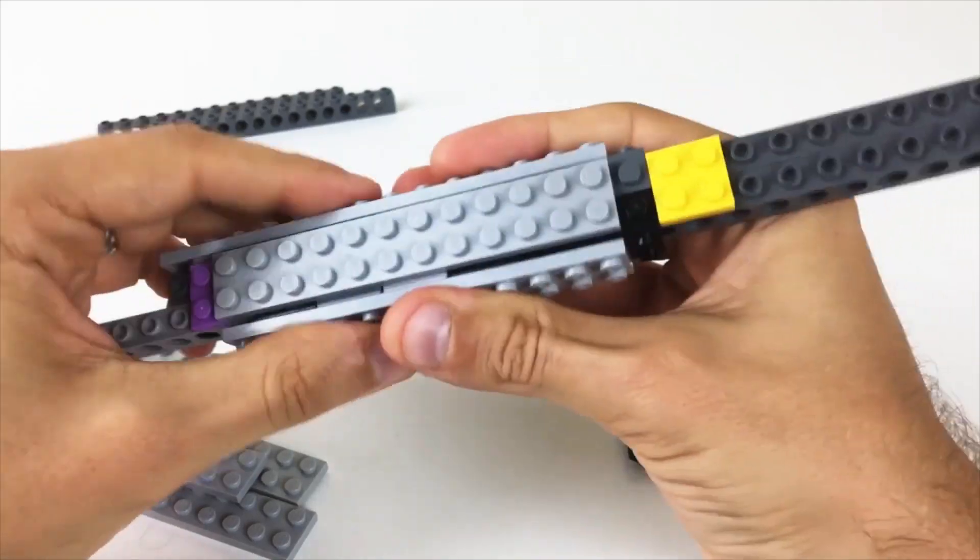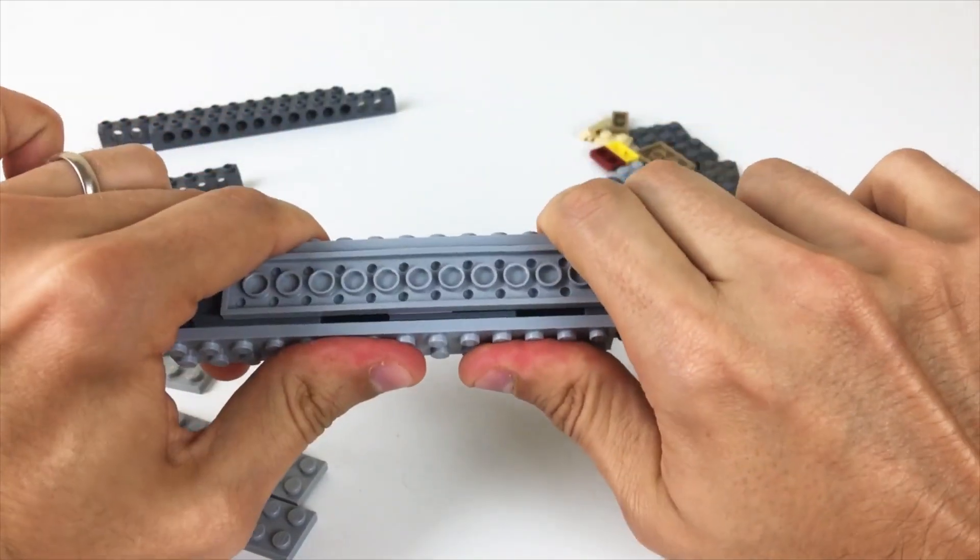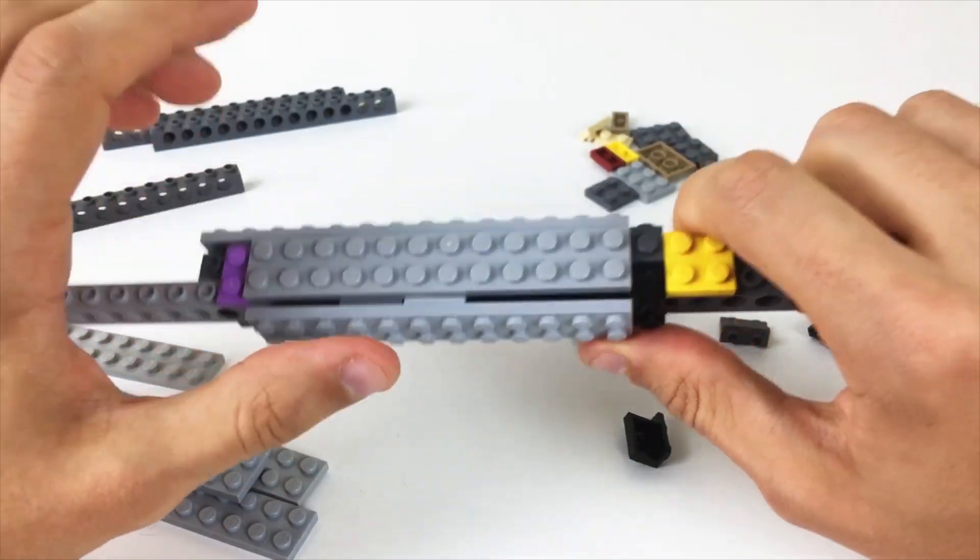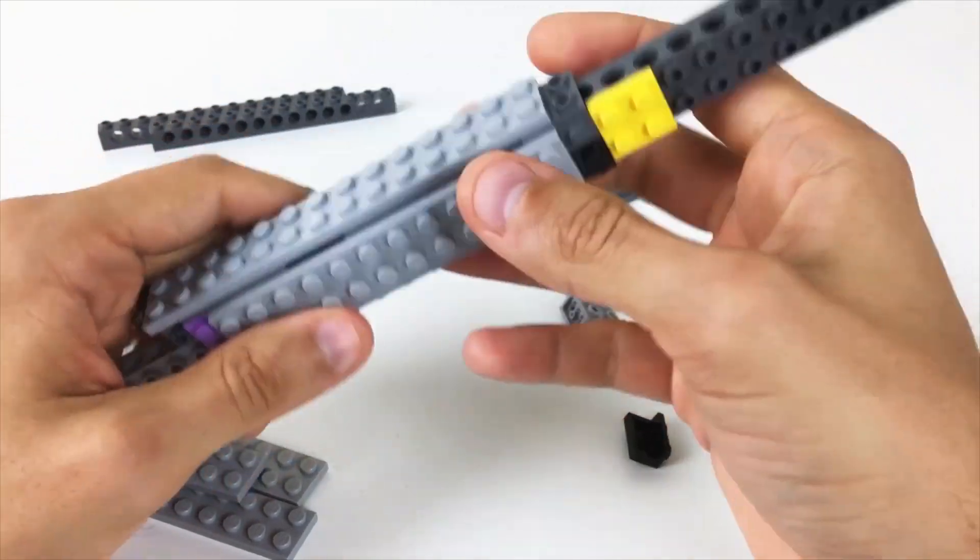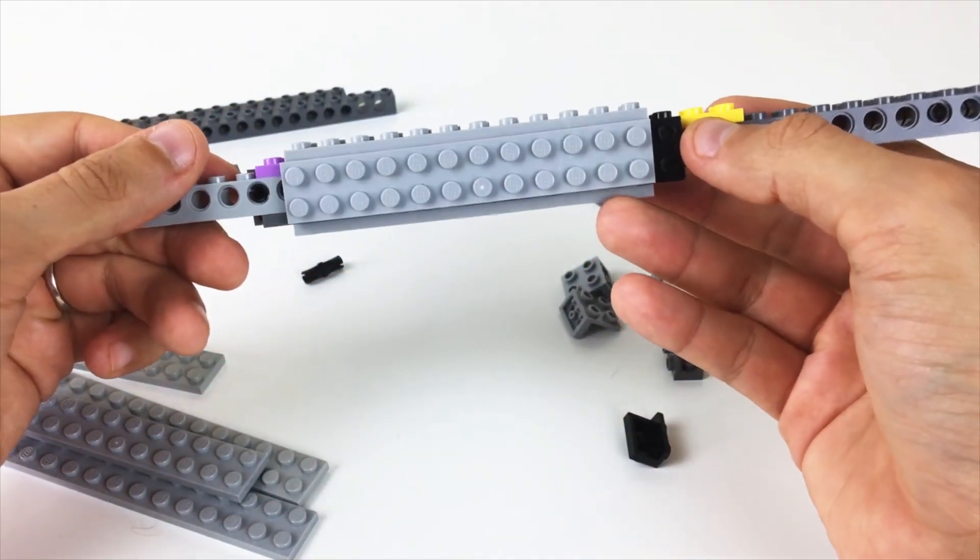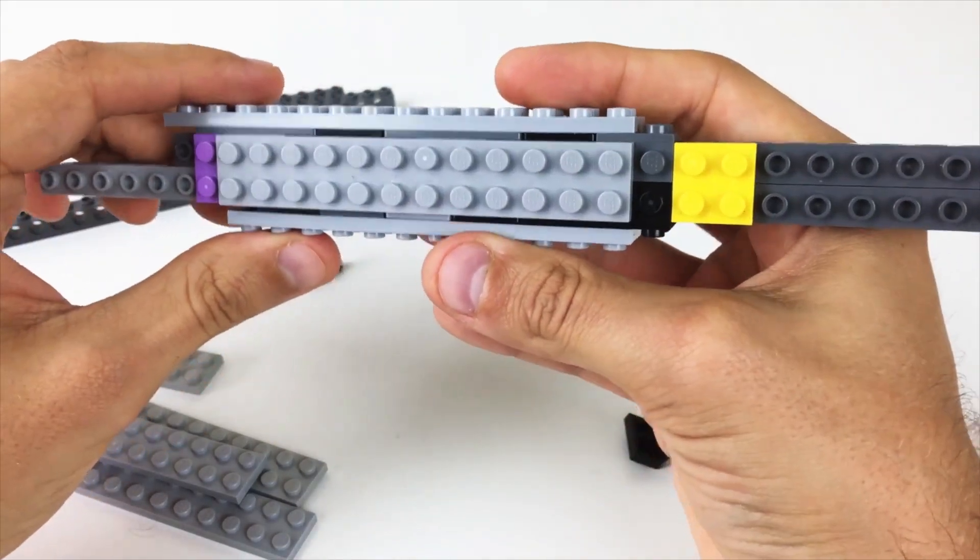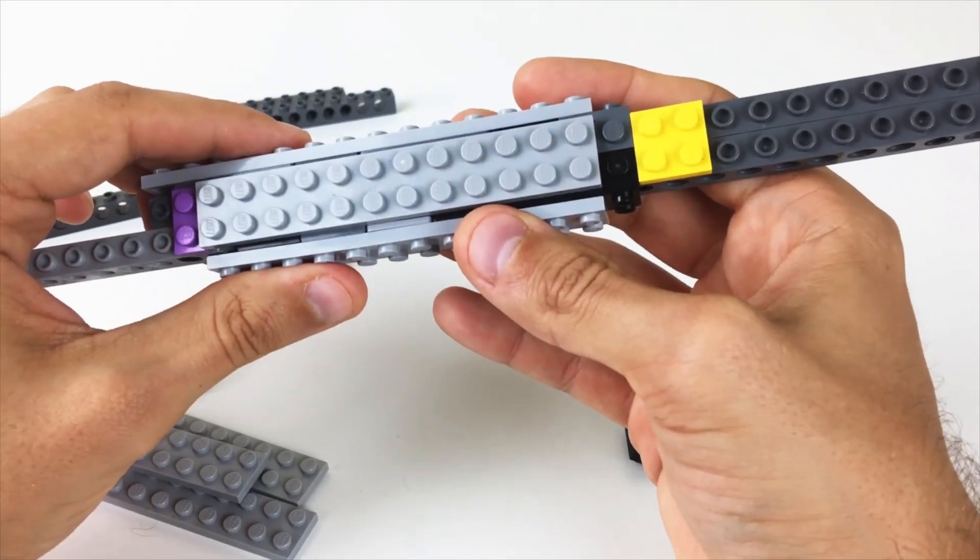And so this structure right here is essentially unbreakable. I mean, if I was to try to bend this, I would probably have an easier time bending a piece of steel than this right here. And if you're making something like, say, model weapons - you know, swords, blades, guns, anything that's meant to be handled a lot and is meant to be structurally sturdy - this is something that will come in really really handy.